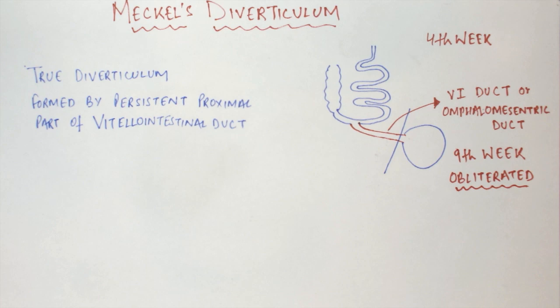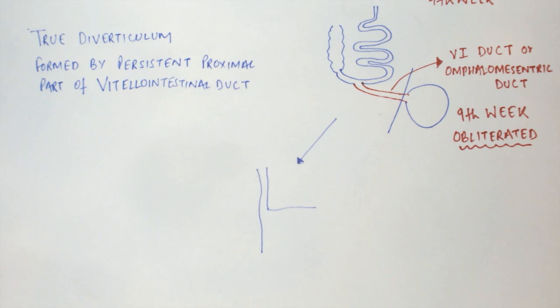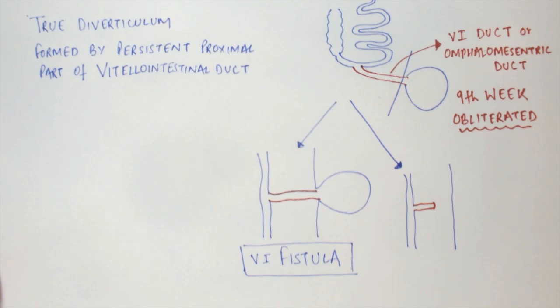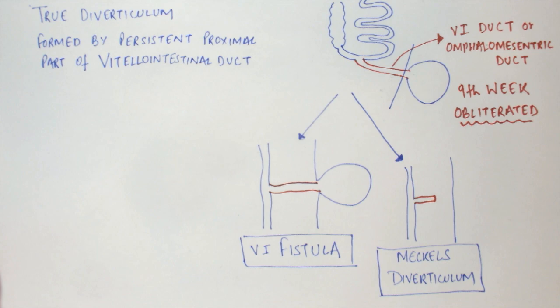If it doesn't obliterate, two conditions can arise. First, the whole of the VI duct can be present and there is a persistent connection between the foregut and the anterior abdominal wall. This condition is known as the vitellointestinal fistula. Second, only the proximal part of the VI duct can be present with no connection to the anterior abdominal wall, and this condition is known as Meckel's Diverticulum.